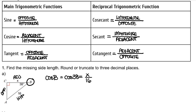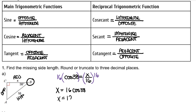Now I have an equation I can solve: cosine 38 is equal to x over 16. I'll multiply both sides by 16 to solve for x, so x is equal to 16 times cosine of 38. Plugging it into a calculator, our answer is 12.60817... Rounded or truncated to three decimal places: rounded would be 12.608, and truncated would also be 12.608. Since we were not given units, here is the length of the missing side.